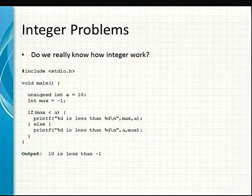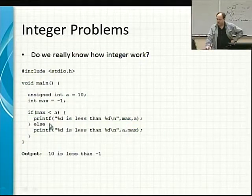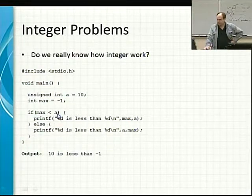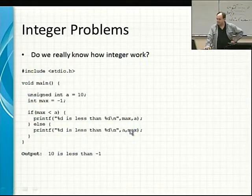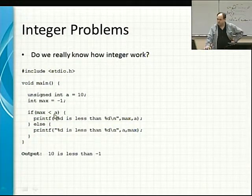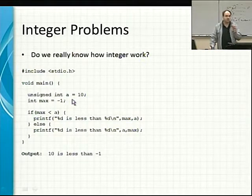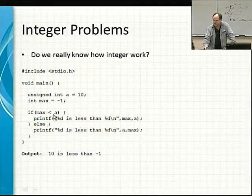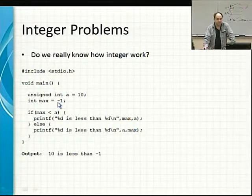Another problem we have is with integers. Do we really know how integers work in our code? Consider: unsigned integer a equals 10, integer max equals negative 1. If max is less than a, you'd print that max is less. But when you run this, the output is '10 is less than negative 1.' Why? In the C language, unsigned integers are given higher precedence than signed integers. If you're comparing a signed integer with an unsigned integer, you implicitly convert the signed integer to unsigned.